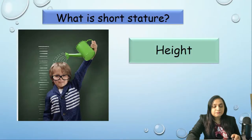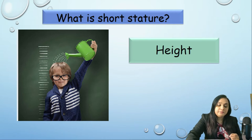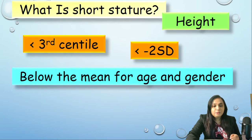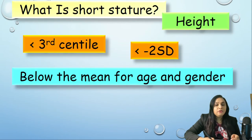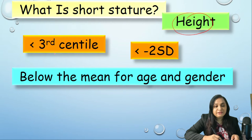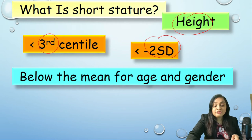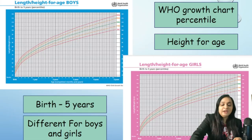The first question is: what is short stature? Obviously it is related to height, but when do we call it short stature? First, we take a measurement of height, then we put that figure in the centile child chart or a growth chart. If it falls below the third centile, or less than minus two standard deviations below the mean for age and gender, then we call that child short.